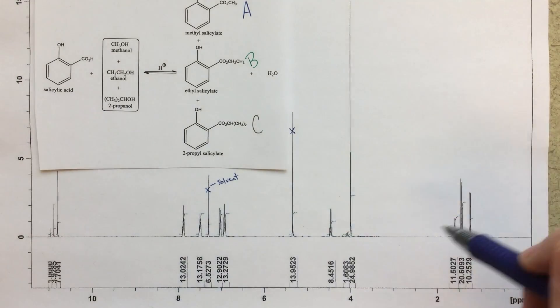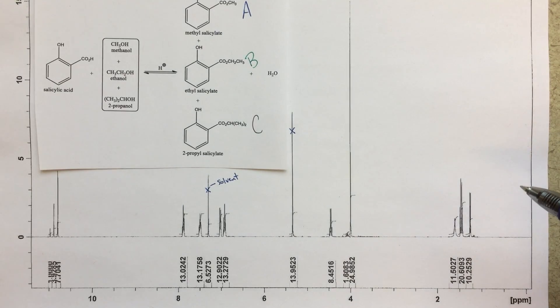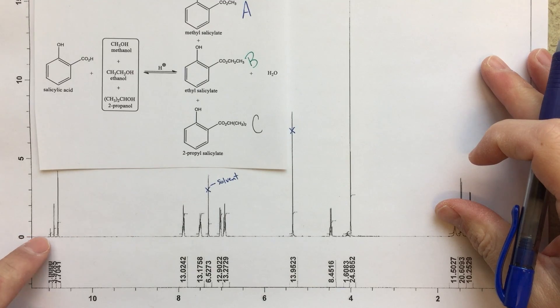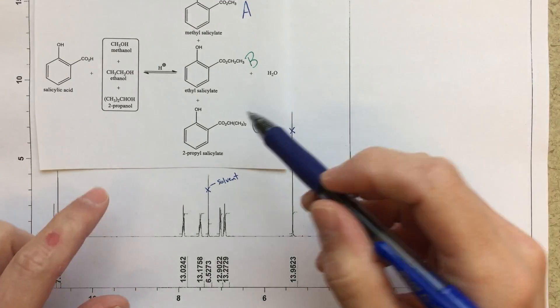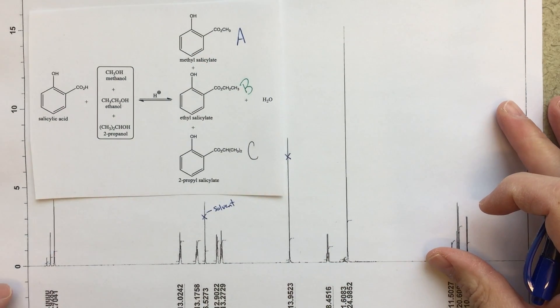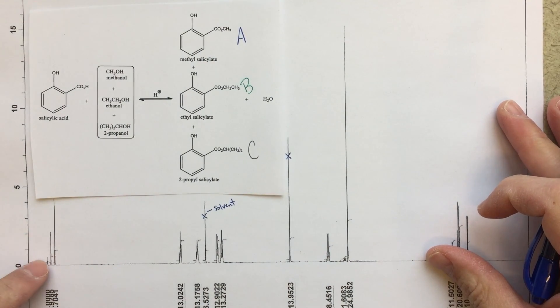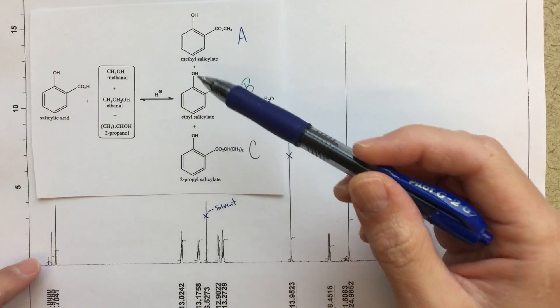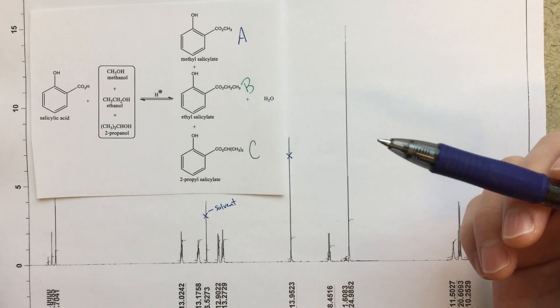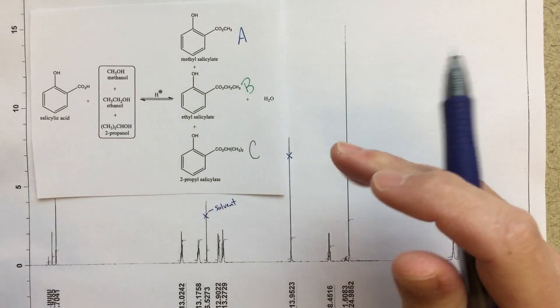So looking at this NMR then, sort of what's left, I think very clearly these three peaks out here around 11, those are going to be my OH peaks, my phenol peaks on my different products. So each one of these is going to correspond to each one of these.